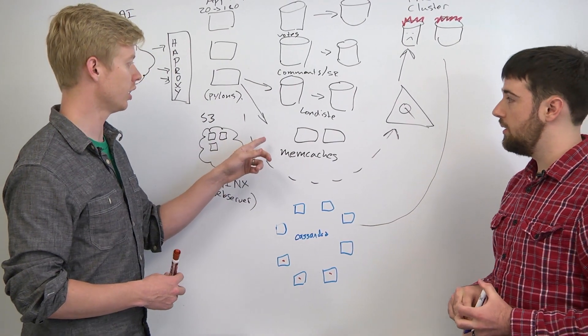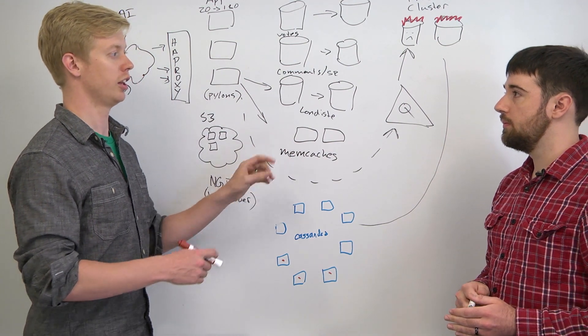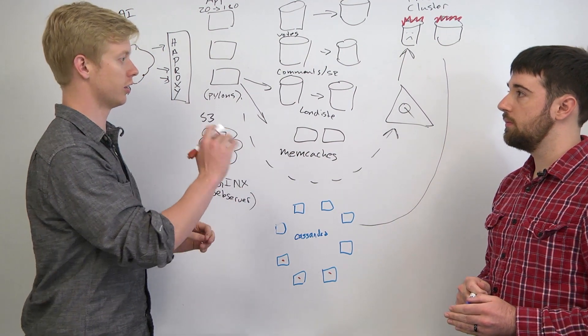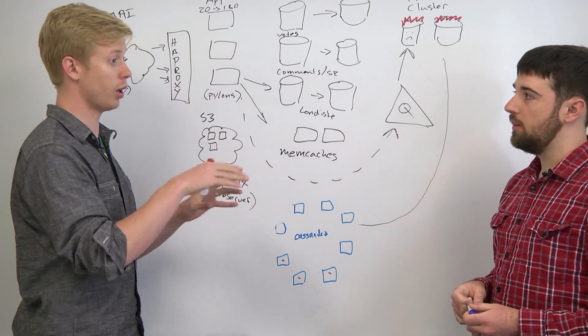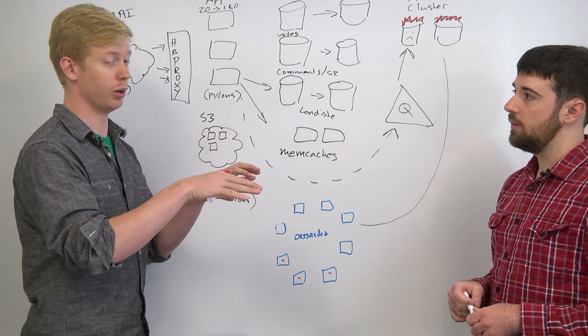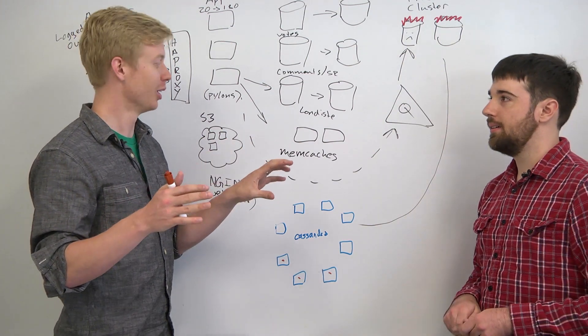When I left, we were using a naive Memcached library that basically took a key and said which box is this hashed to and would store it on that box. If you lost that box, it would affect the hashing of every other key. Losing a Memcached box was really painful.